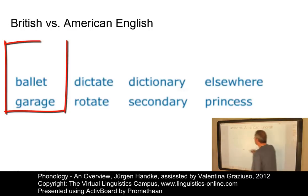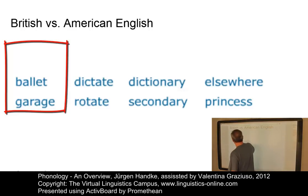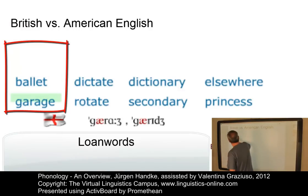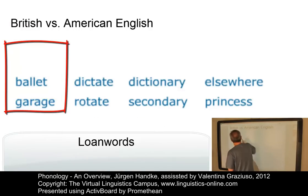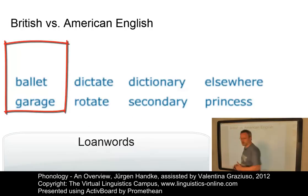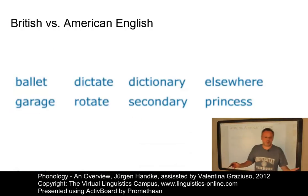Let's look at them — you can see them here in the first column of examples. Let's listen to British English first: 'ballet,' 'garage.' Now American English: 'ballet,' 'garage.' So what's the difference?